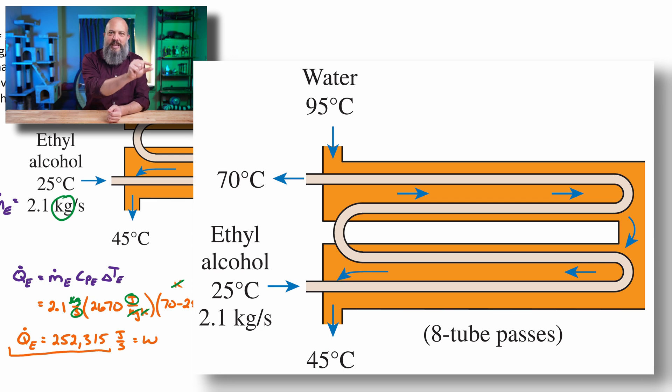the ethyl alcohol tubes actually snake back and forth four times. So the second half of the water actually sees four different passes of the ethyl alcohol.